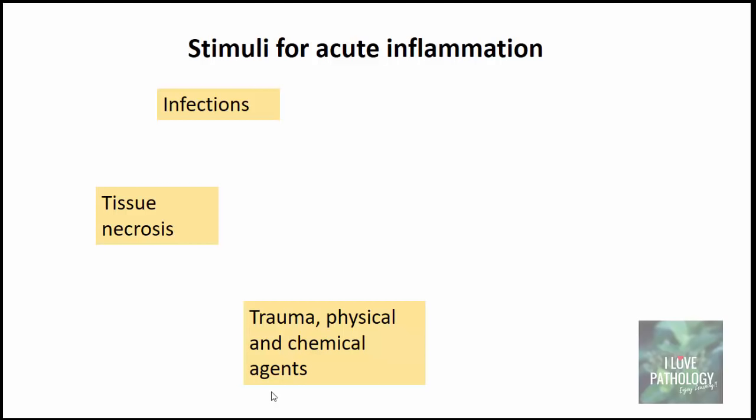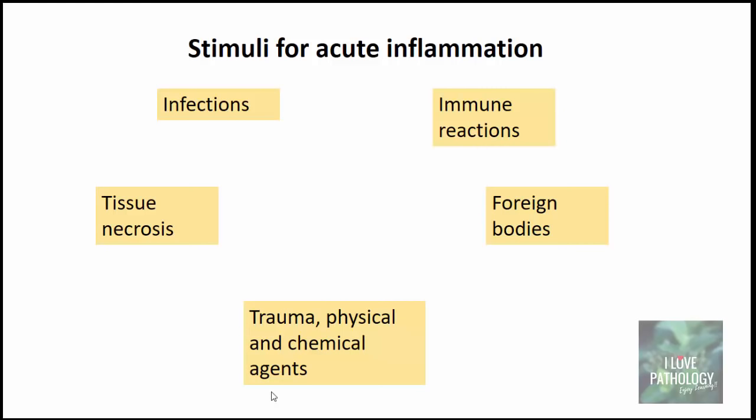The third stimulus is trauma, which includes physical or chemical injuries and exposure to environmental chemicals. Foreign bodies such as suture material, splinters, and dust particles can by themselves elicit an inflammatory response, or trigger it by injuring surrounding tissue. Lastly, immune reactions — particularly in autoimmune disorders or hypersensitivity reactions — can also trigger inflammation, even though they are normally a protective mechanism.